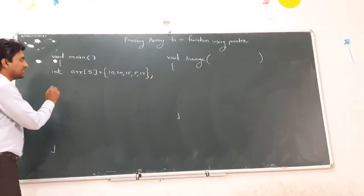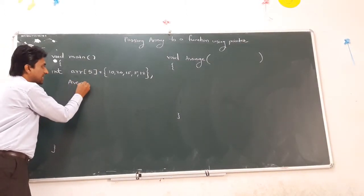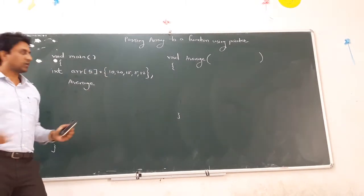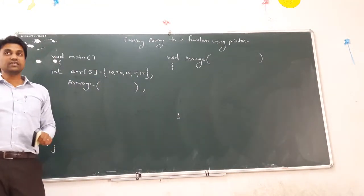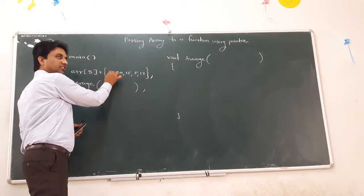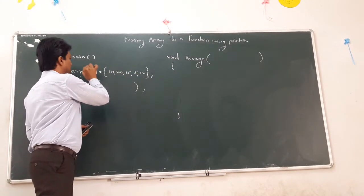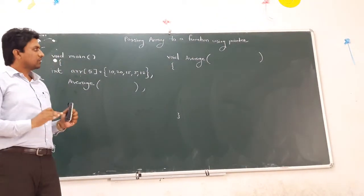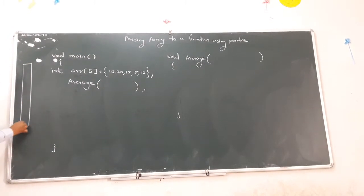We have to call the average function using the same name. We have to pass the total array — not single elements like `arr[0]`, `arr[1]`, `arr[2]`, `arr[3]`, `arr[4]` individually, but the whole array. For understanding, we draw the RAM for memory management.